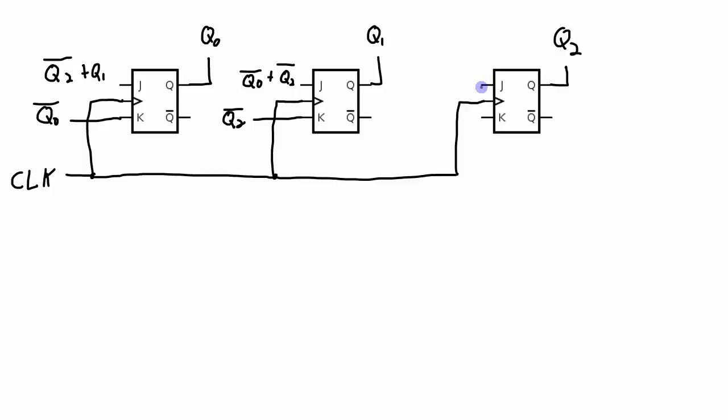The logic going into this J, which is J2, is Q0. And the logic going into this K, which is K2, is Q1 anded with Q0.